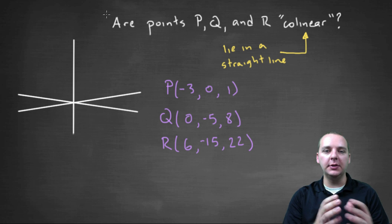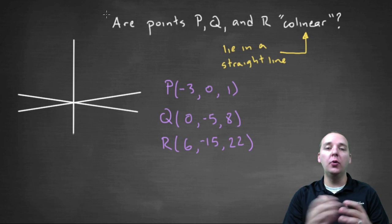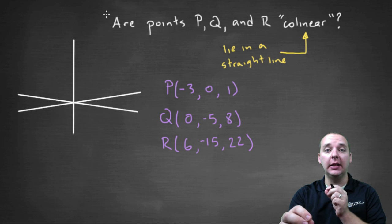Here we're being asked if three points P, Q, and R are collinear, which basically means: do these three points line up in a straight line?